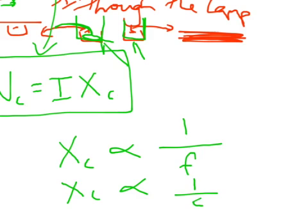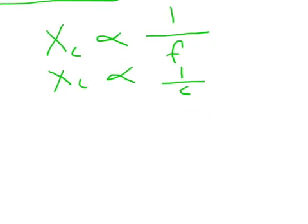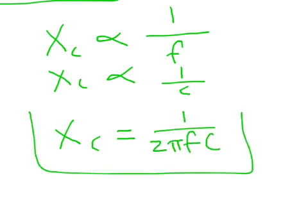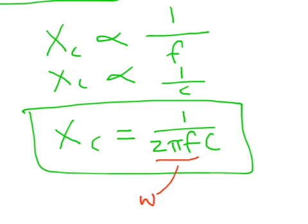And if we combine those with a proportionality constant, it turns out the proportionality constant is 1 over 2 pi, which is very interesting. So we get this expression here, equals 1 over 2 pi fc. So that's a really important formula. And again, so increase the capacitance or increase the frequency, and you decrease the reactance, and the opposite is true. And interestingly as well, this 2 pi section, 2 pi f, that's the angular frequency. That was in your AC part in the previous video.